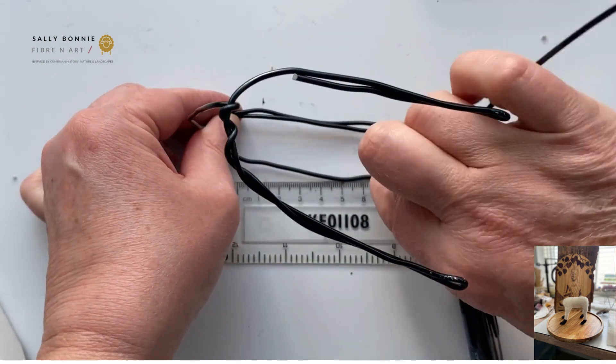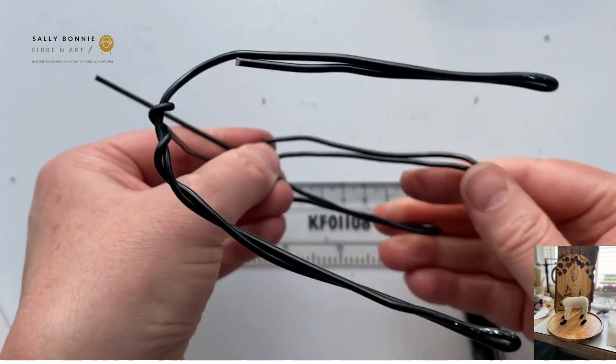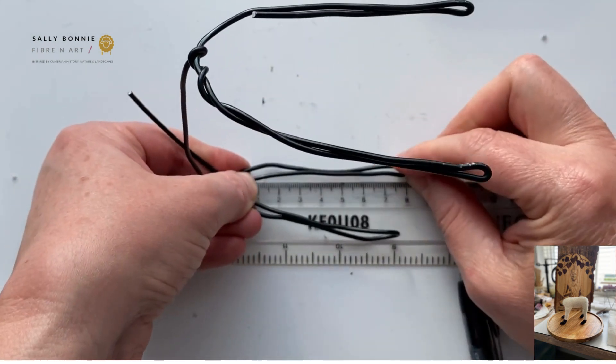And then we're going to go over and back down, so you're making an arch like you did on the other one. And then you're doing exactly the same, you're doing your eight centimeters. Bring it back on itself. Just check you're happy with the length of those.